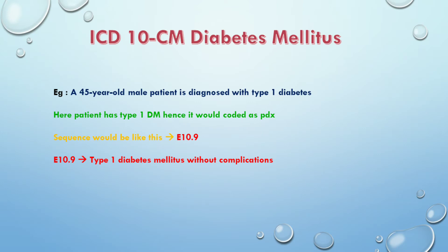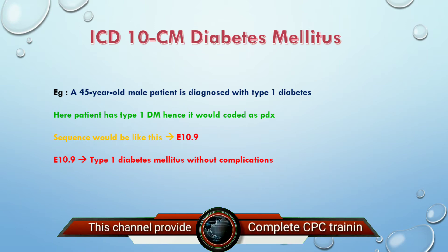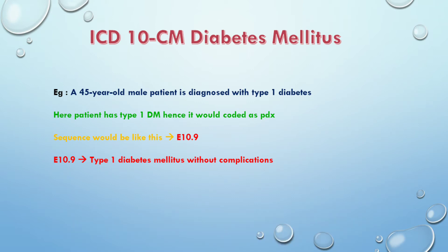I will show you some examples. The first example: a 45-year-old patient is diagnosed with type 1 diabetes mellitus. Type 1 diabetes mellitus has a direct code. We search for type 1 diabetes and after the tabular list, we identify the code. The patient has type 1 diabetes, hence it would be coded as the primary diagnosis. Type 1 diabetes is in the sequencing of series E10. Confirming in the tabular list, the code is E10.9, which is type 1 diabetes mellitus without complications.